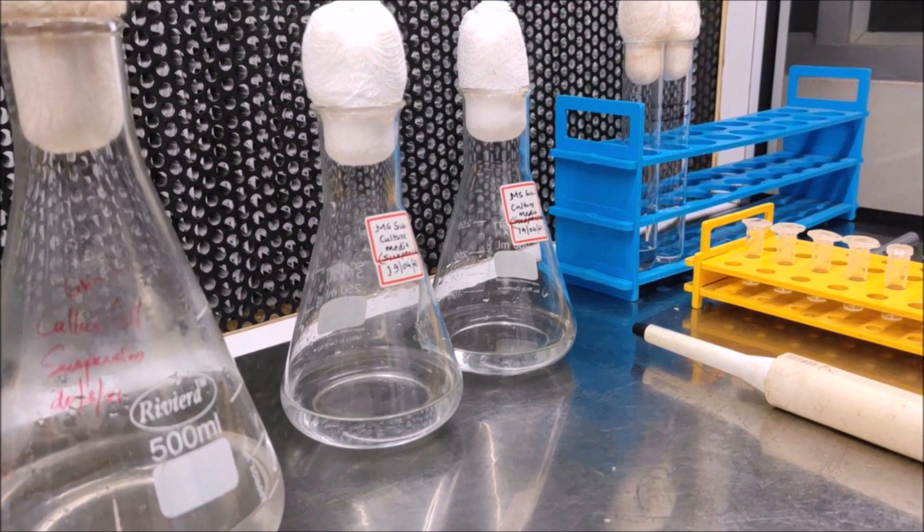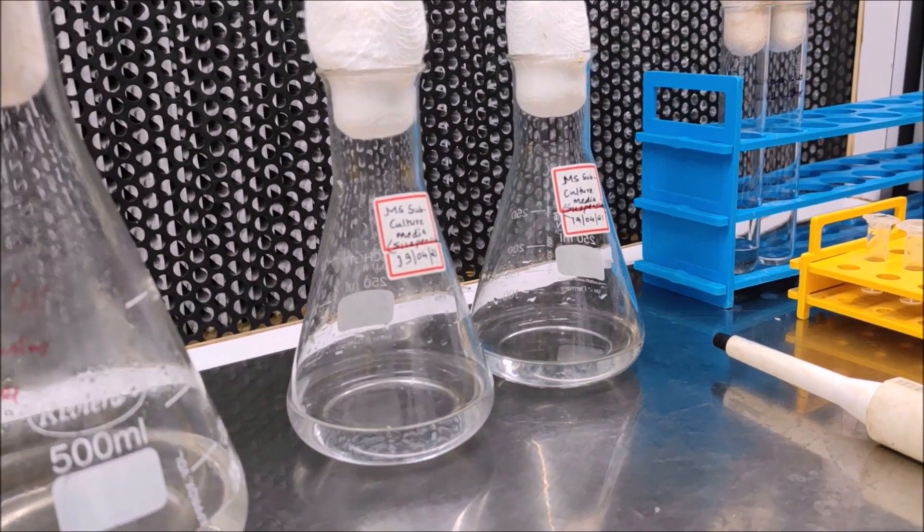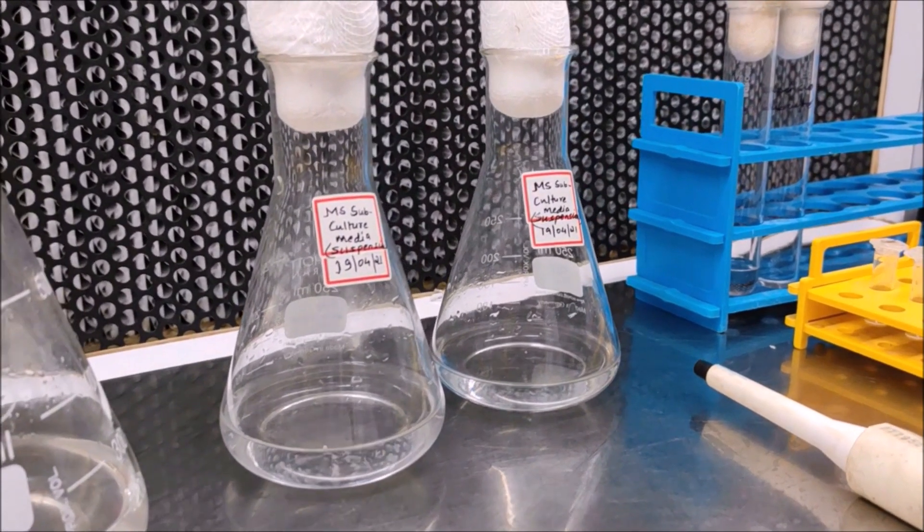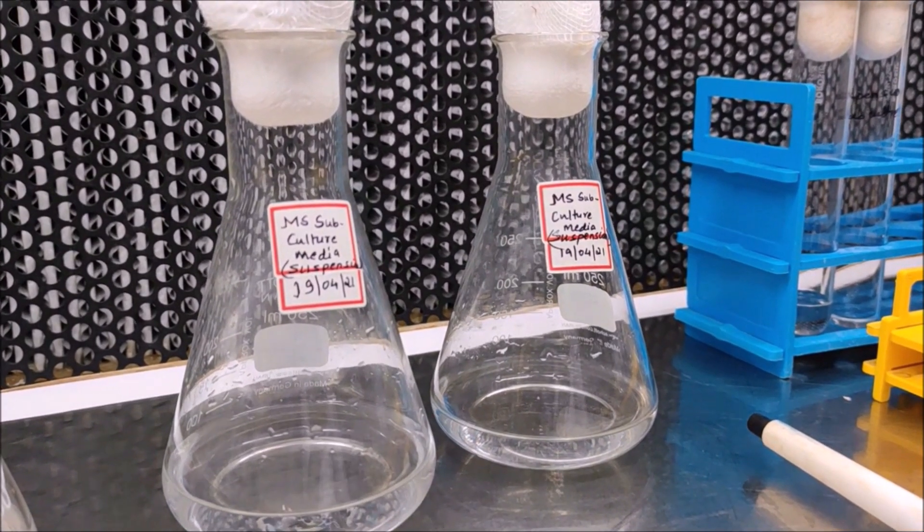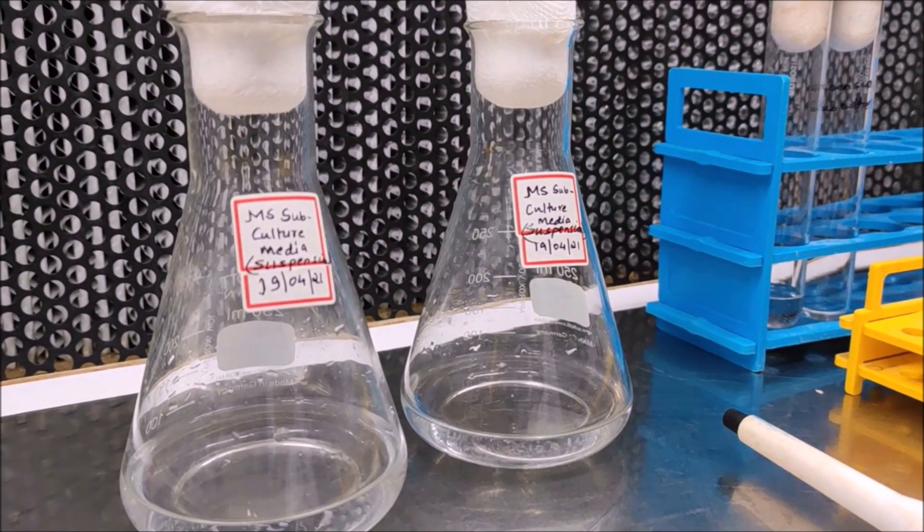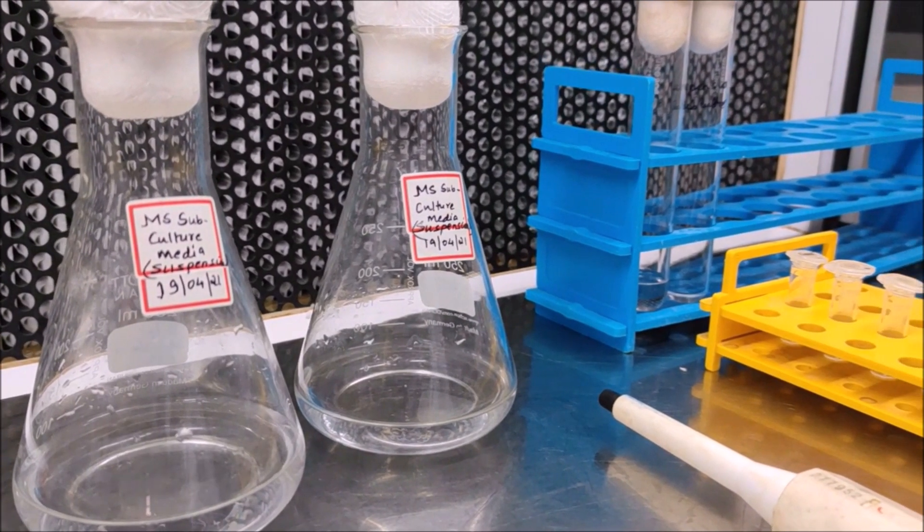Eppendorf tubes for taking cells for determining cell density and viability. New flask with 70 ml fresh sterile liquid medium. Culture tubes for aliquoting the suspension culture and transferring it into the fresh medium.